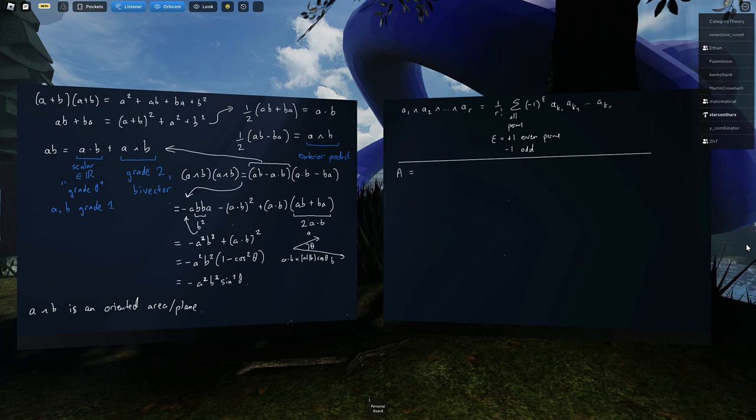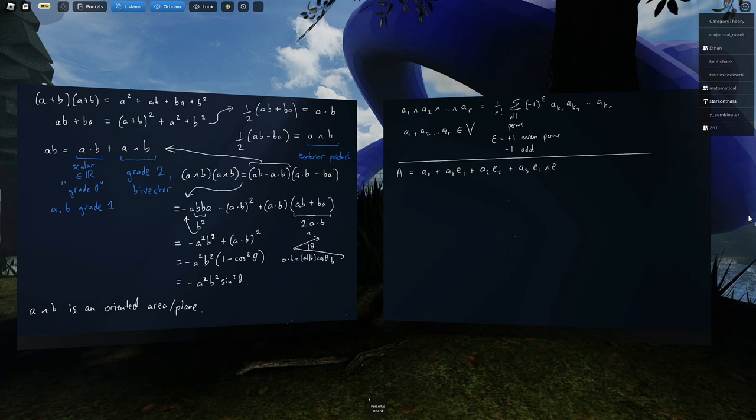Let's write out the multi-vector A, which is, this is an unfortunate notation now. The AR are elements of the vector space. But here, I'm going to use the A's to denote scalar multiples. So A1E1 plus A2E2 plus A3E1∧E2, for A0, A1, A2, A3 all in R, and E1 and E2 form an orthonormal basis. So E1² = E2² = 1, and E1·E2 = 0.